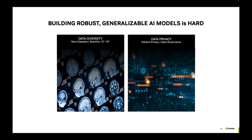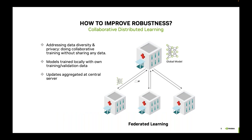In general, building robust generalizable models is difficult due to a couple of factors. One is the issue of data diversity — in cases where you're trying to build models to predict rare diseases, data scarcity is a big concern. Building out diverse data sets requires pulling in data from different institutions. When you have this need, data privacy is a concern, especially in healthcare where we have concerns for patient privacy and data governance. One option that has emerged is federated learning, where we can address data diversity by building out data sets across different sites and enabling training without sharing any data among those sites. Models are trained locally on individual sites and validated on local data, with a central server aggregating the results without sharing data to build a global model.